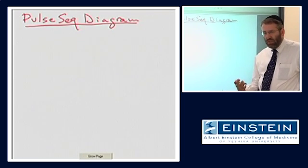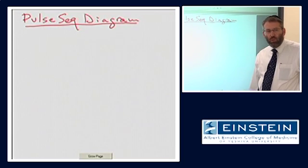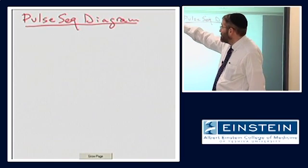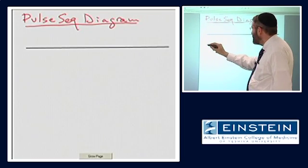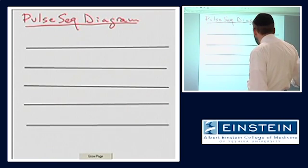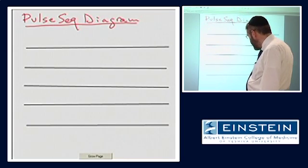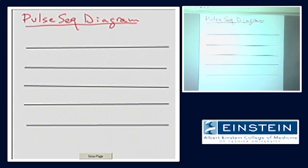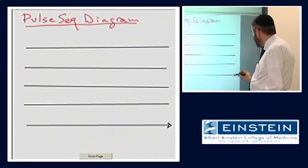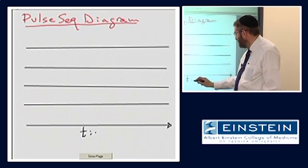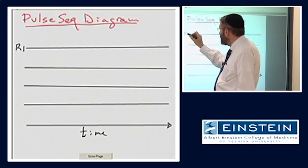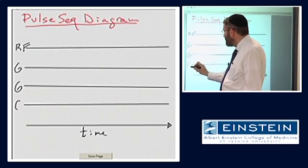But the pulse sequence is simply a description of the timeline of what we do in order to generate and measure the MR signal. So, when you look at these diagrams, they will have a series of lines, a series of these horizontal lines. And depending on who has drawn it, there might be different approaches as to how to label these. But suffice it to say, that this is all a timeline that progresses from left to right.